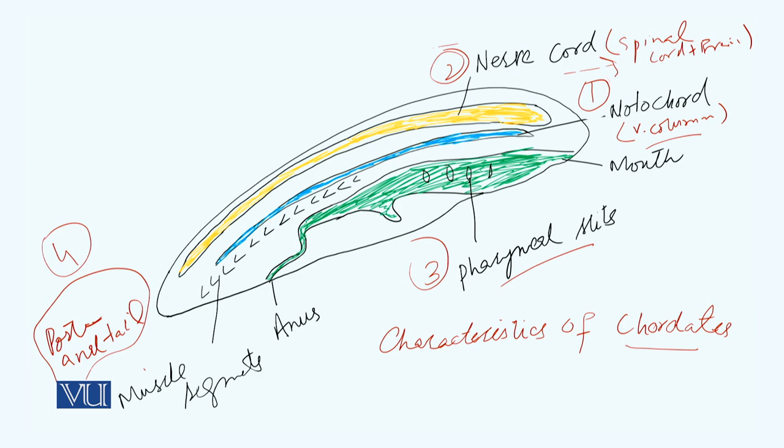These characteristics in chordates may exist at any time in life. The nerve chord later on in some organisms may convert to spinal chord and brain. The notochord becomes the vertebral column. In pharyngeal slits, lungs or pharyngeal glands or gills may develop.